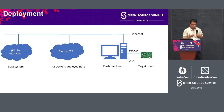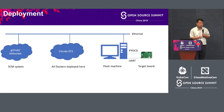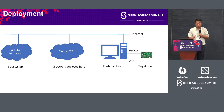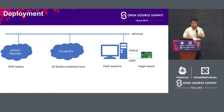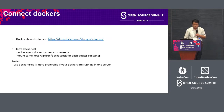The deployment is simple: we need an SCM system — either GitHub or Bitbucket — then build a local cloud or rent cloud ECS. On the cloud ECS, you deploy all Dockers. We need a flash machine, and the board is supported by PyOCD, with logs collected via UART. The whole process is straightforward. For the cloud ECS, we can use open-source solutions or other options depending on program evolution.